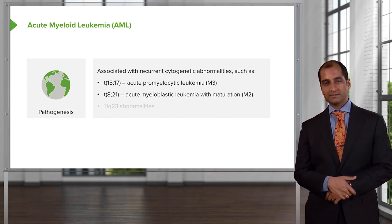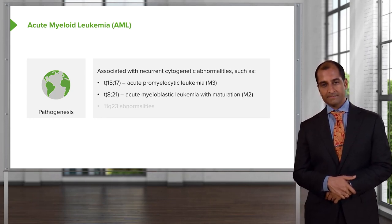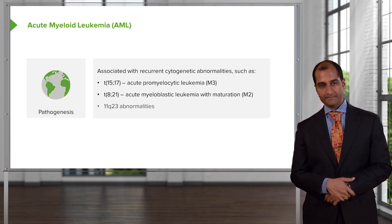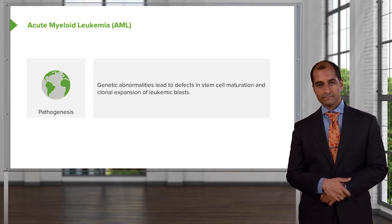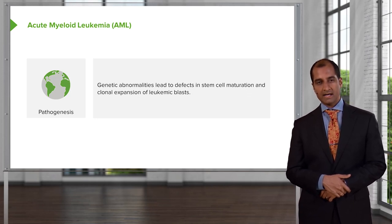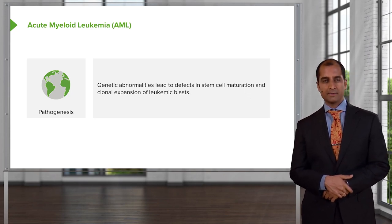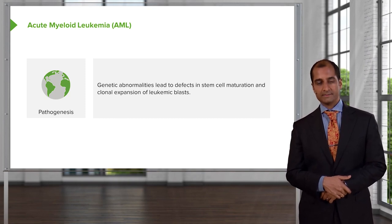Translocation 8;21 is another important one — this is M2. Please note this as being myeloblastic. Promyelocytic is M3; myeloblastic is M2, with translocation 8;21. Genetic abnormalities in AML lead to defects in stem cell maturation, and by definition you are going to find greater than 20% blasts in the bone marrow.